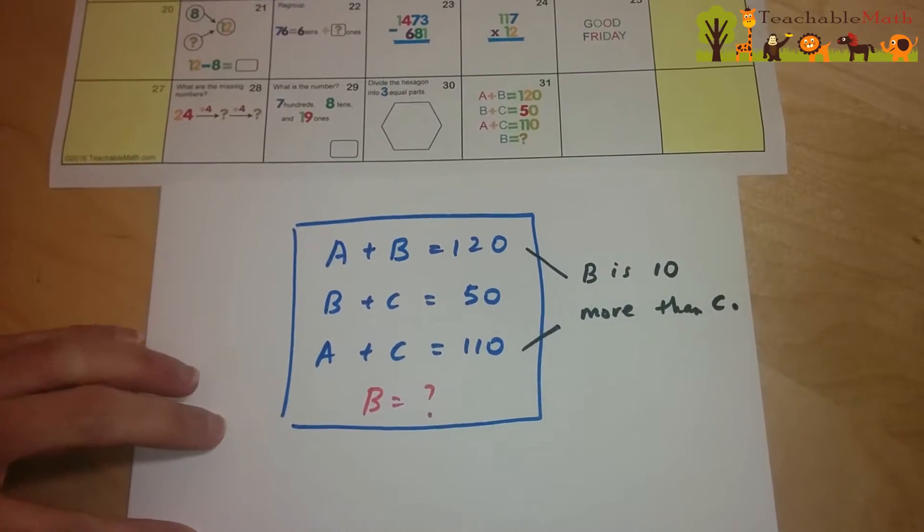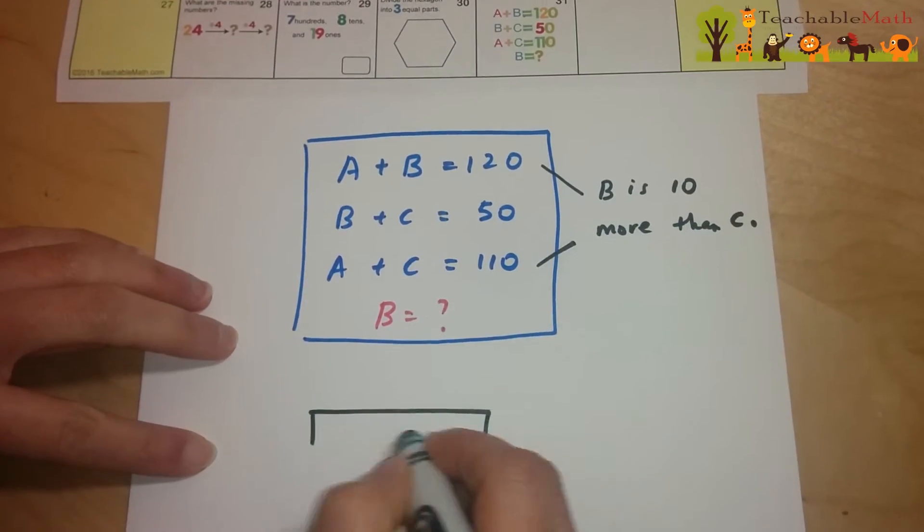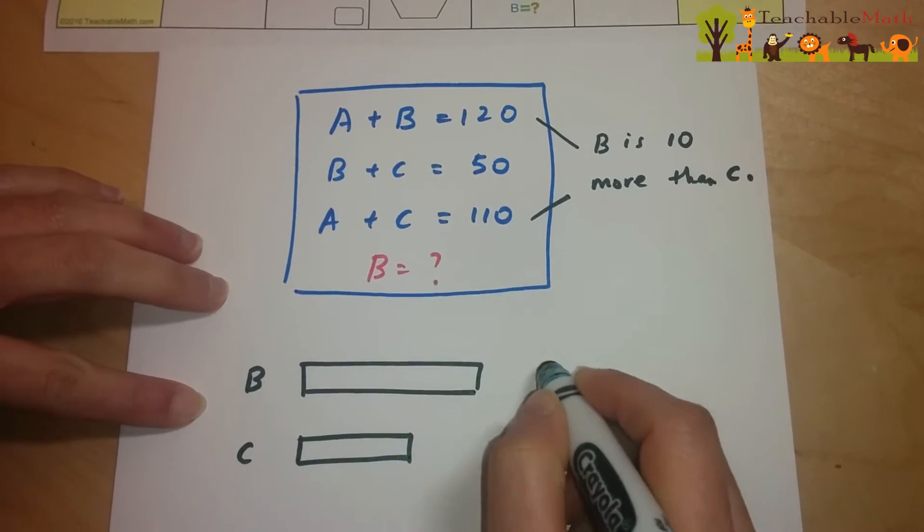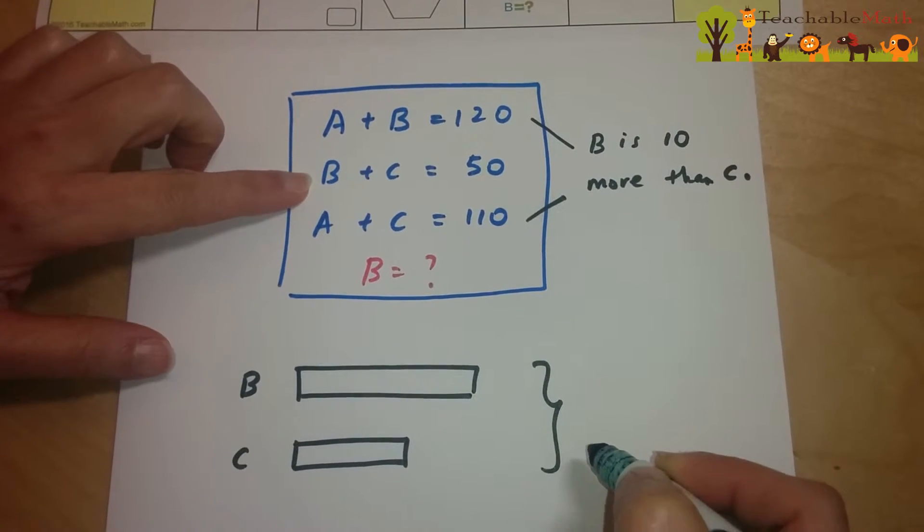So let's start by drawing our bar model. Together, they give you 50.